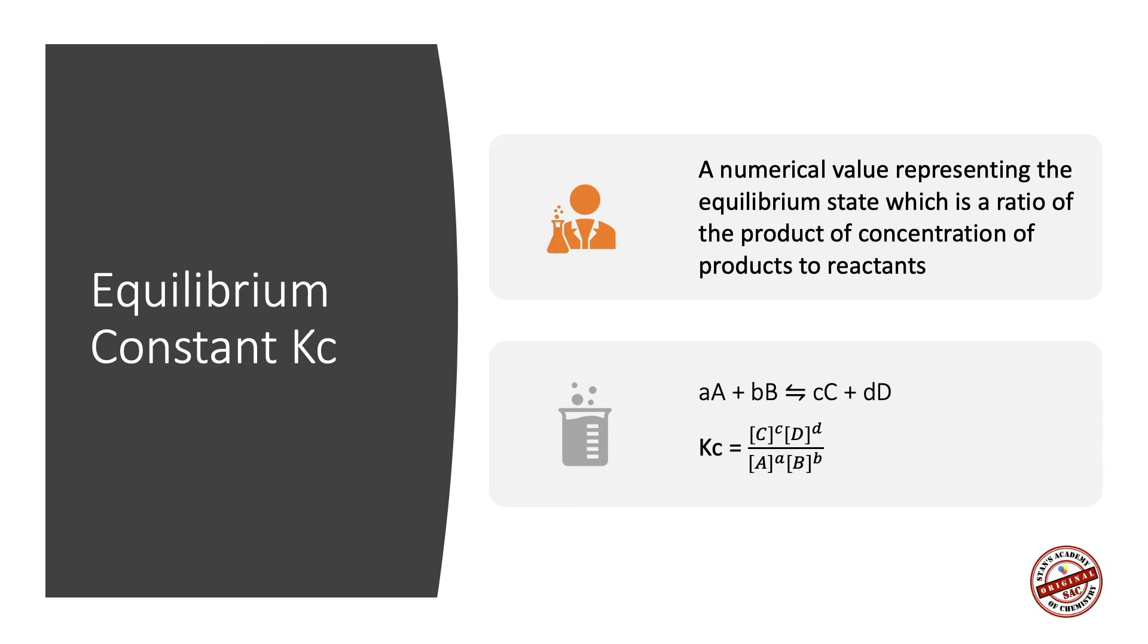For this reaction A plus B giving you C plus D, the equilibrium constant Kc can be calculated by multiplying the product of the concentration of C and D raised to the appropriate coefficients divided by the product of concentration of the reactants A and B raised to the appropriate coefficients.